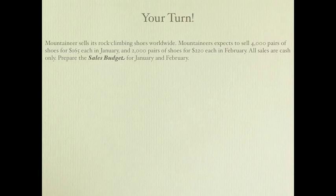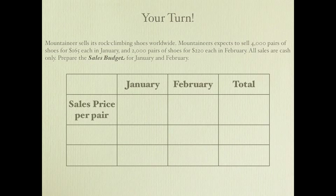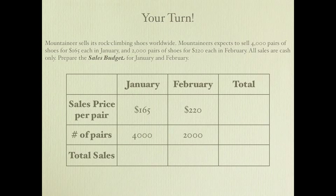I hope you were able to complete the problem. Set up your grid with months January, February, and a total column. The sales price per pair was $165 in January and $220 in February. The number of pairs anticipated was 4,000 in January and 2,000 in February. That gives total sales of $660,000 in January and $440,000 in February — all cash sales — for combined total sales of $1.1 million.